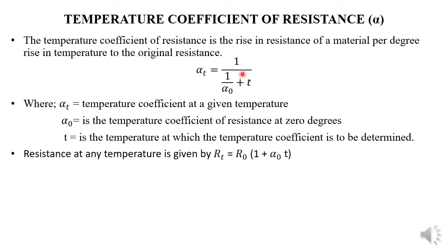The resistance at any temperature is given by R_t, the resistance at a given temperature, which equals R_0, the resistance at the initial temperature, multiplied by the bracket one plus alpha_zero, which is the temperature coefficient of resistance at zero degrees, multiplied by t, the given temperature.